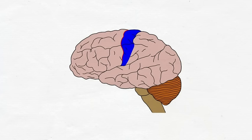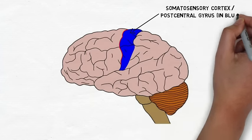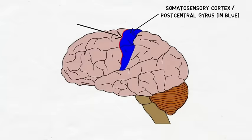The primary somatosensory cortex is located in a ridge of cortex called the post-central gyrus. It is situated just posterior to the central sulcus, a prominent fissure that runs down the side of the cerebral cortex.